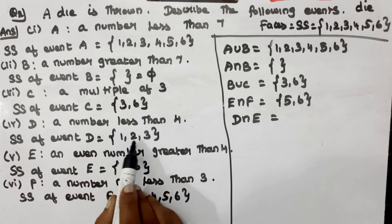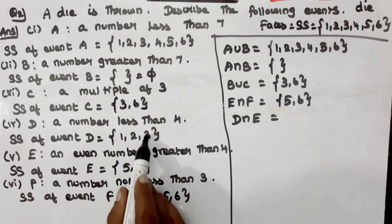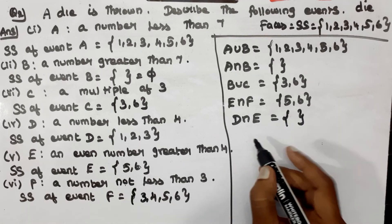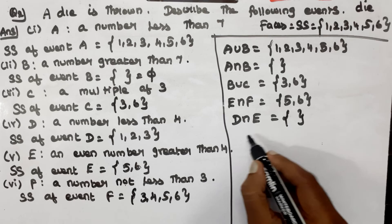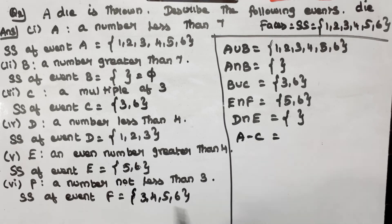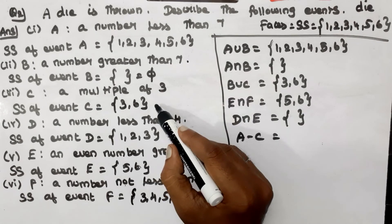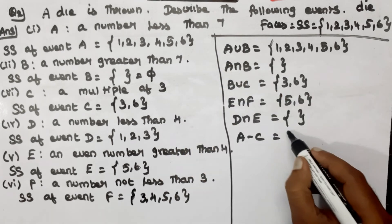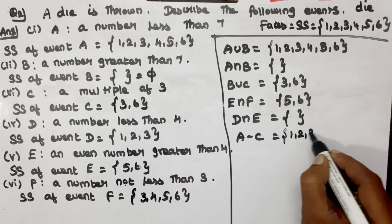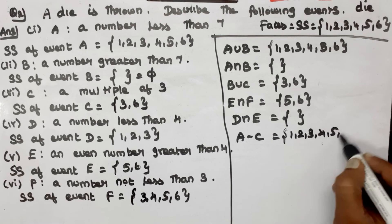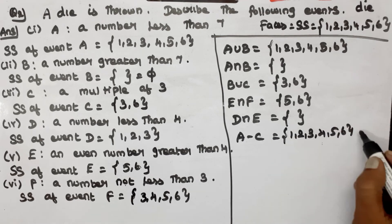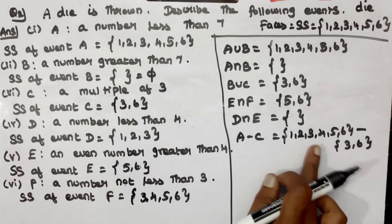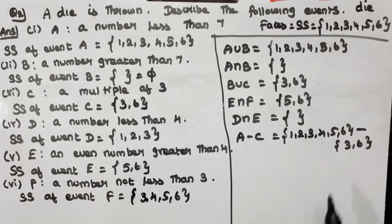D is equal to 1, 2, 3. E is equal to 5, 6. So two common elements — the intersection is equal to the null set. A minus C: A minus C is equal to... the remaining elements after removing C. So A minus C is equal to 3, 6 removed, leaving the remaining numbers.